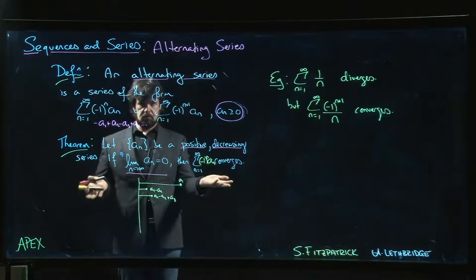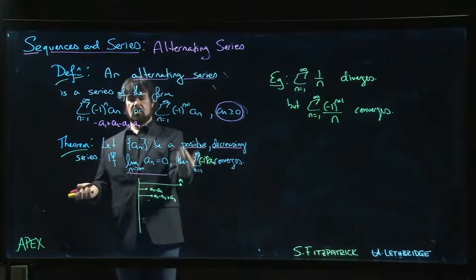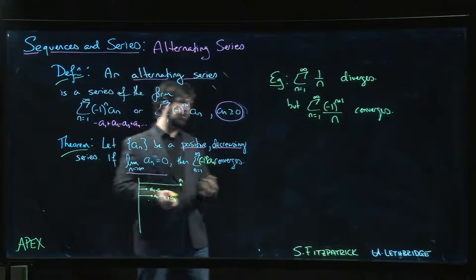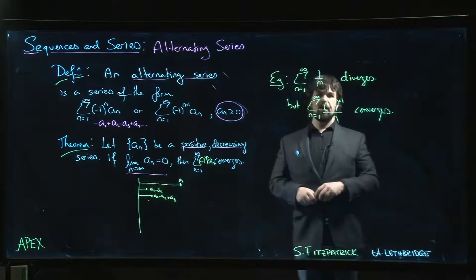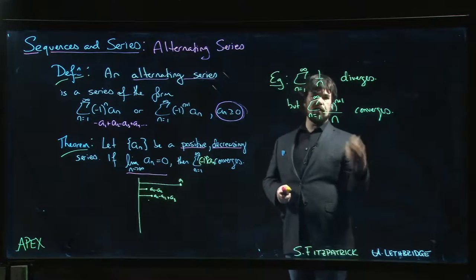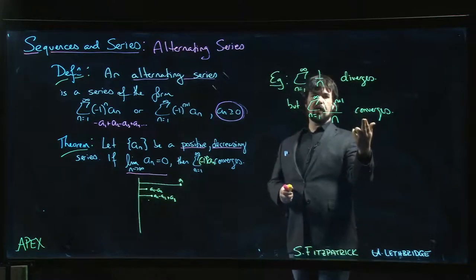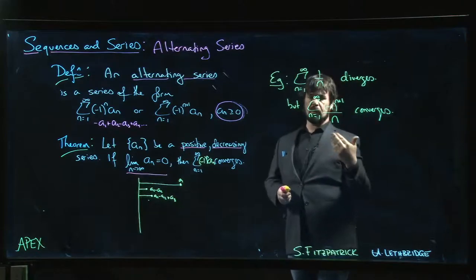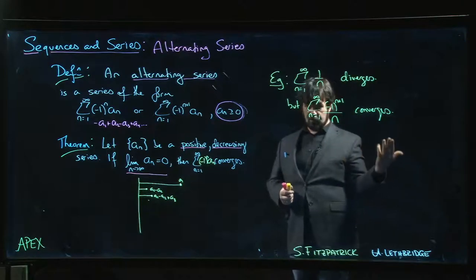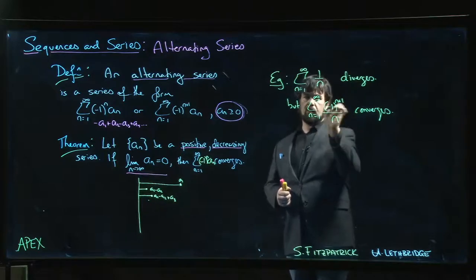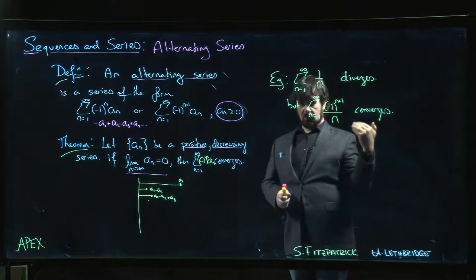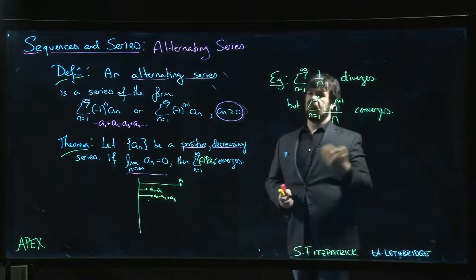We'll look at a few examples, see how the alternating series test applies, and then we're going to come back to this question of convergence of the alternating series versus the corresponding non-alternating series. This gets us to absolute convergence. Absolute convergence is: what happens if you take the absolute value, drop the minus sign—do you still have convergence or not? That's going to be an important question.